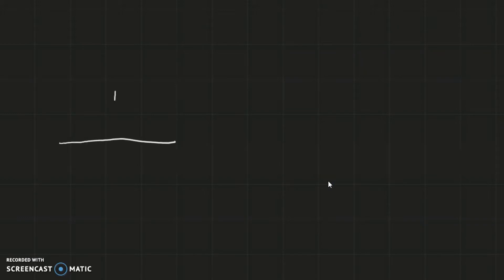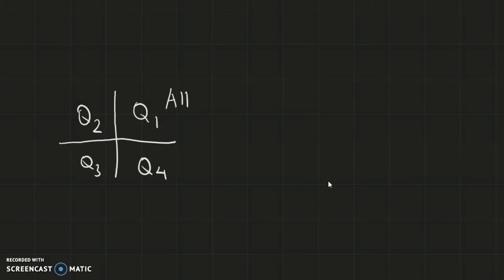The first step is to remind you of the different quadrants and which identities are positive in each one. In quadrant 1, all are positive. In quadrant 2, only sine is positive. In quadrant 3, only tangent is positive. And in quadrant 4, only cosine is positive.